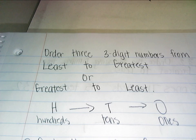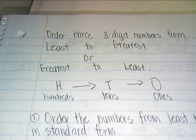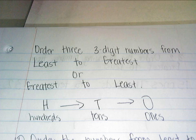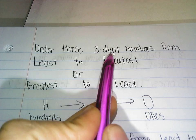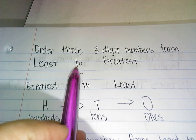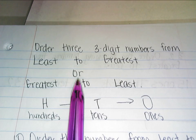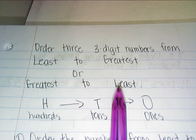Hi class, today you're on Module 3, Lesson 18. You are going to order three three-digit numbers from least to greatest, or greatest to least.